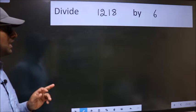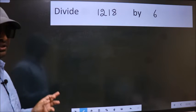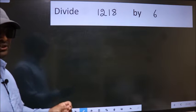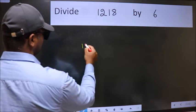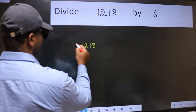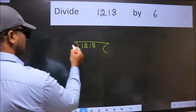Divide 1218 by 6. To do this division, we should frame it in this way. 1218 here, 6 here. This is your step 1.